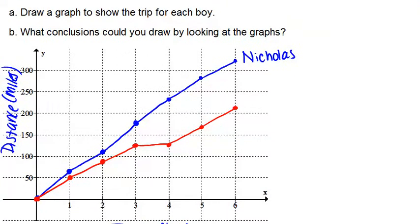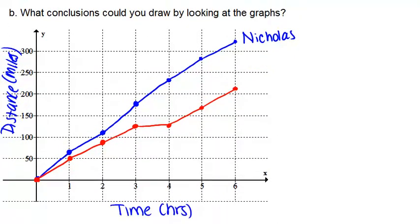And now the question said what conclusions could you draw by looking at the graphs? So you could say a bunch of things. You could say Nicholas went further than Jordan. We can see that by the fact that he ended up further away than Jordan did. You could also say that Nicholas was traveling faster than Jordan. You could say that Jordan stopped at this point right here. There was no movement whereas it didn't appear that Nicholas ever stopped. All of those things are things you can see by looking at this double line graph. One advantage of the double line graph is that you can actually compare these two sets of data pretty easily because you can see it visually as opposed to when it's in the table. It's a little bit harder to compare sometimes.